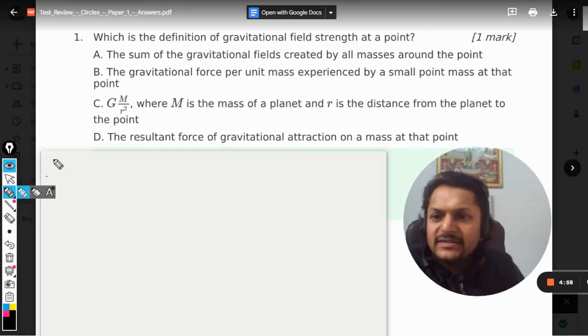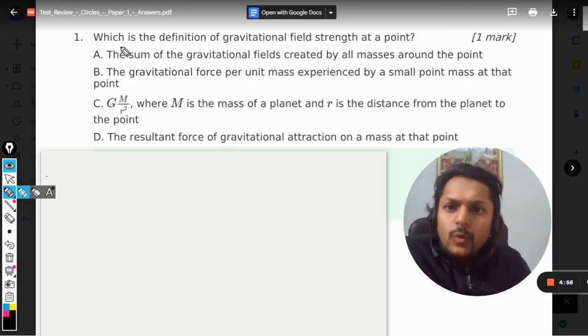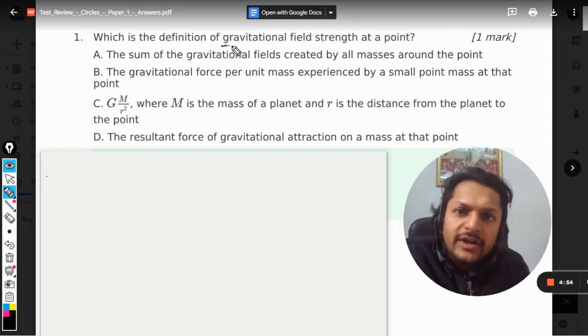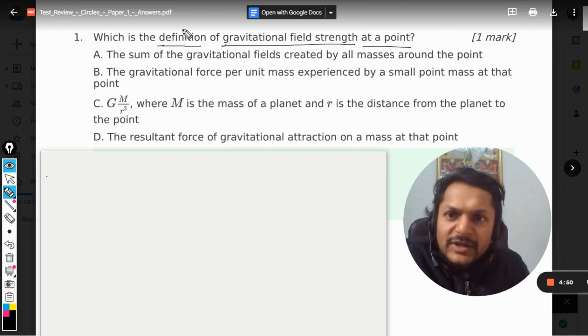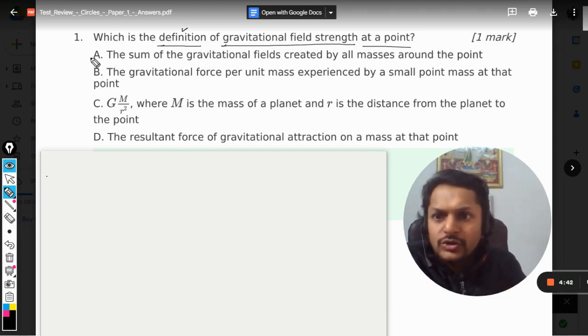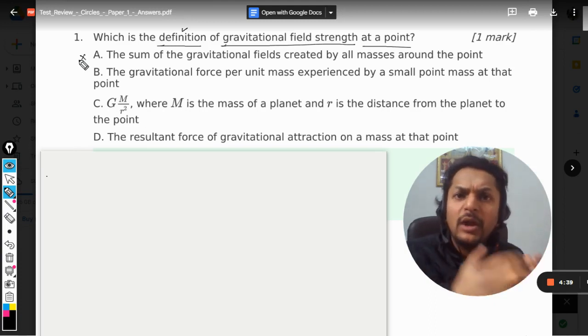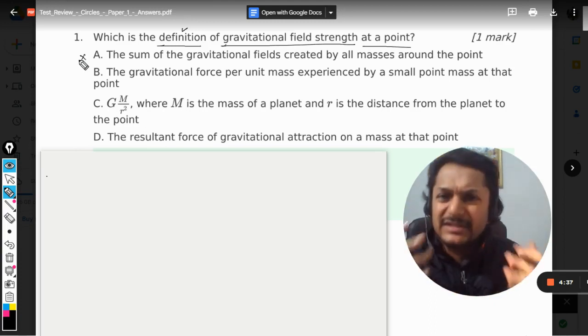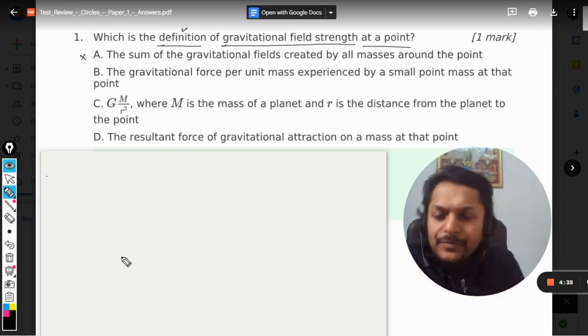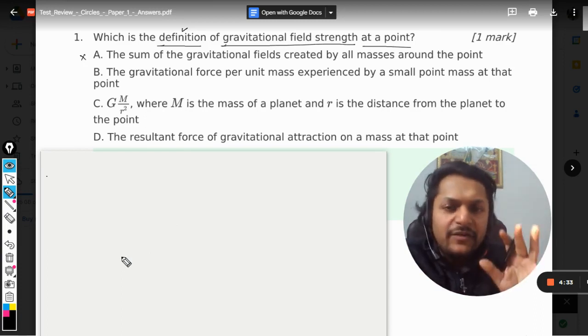Okay dear students, let us see what is there in this question. Which is the definition of gravitational field strength at a point? And they are specifically talking about the definition. Now A is the sum of the gravitational fields created by all masses around the point. No, this is wrong answer. Let us first of all understand what is gravitational field strength and then we will see the options.